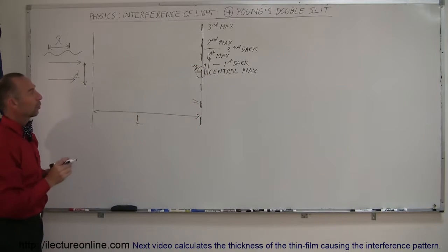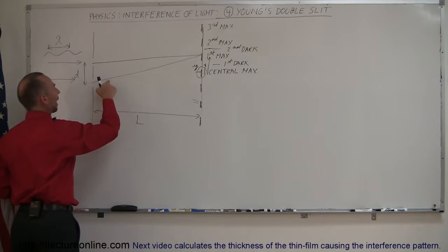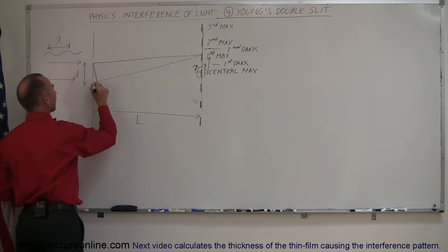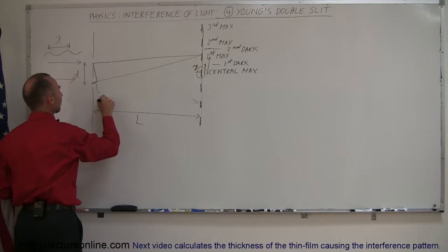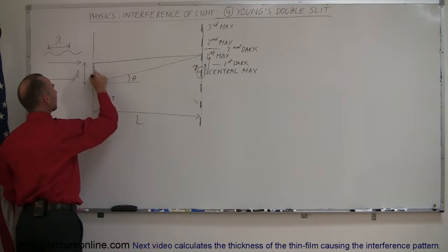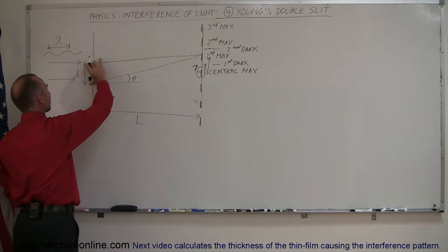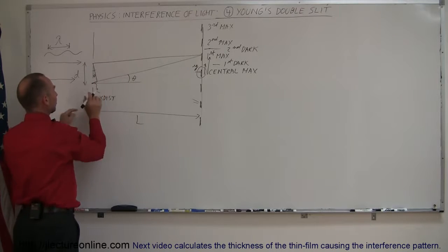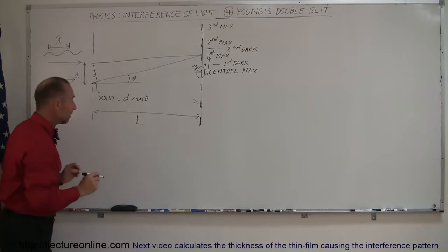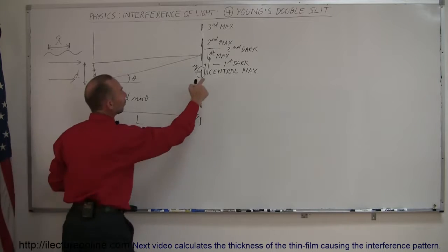To find the location of the first maximum, we can see that one path is slightly longer than the other. Drawing a perpendicular line, the extra distance traveled by the second ray compared to the first ray can be identified. If this angle is theta, then the extra distance is opposite to the angle in the triangle with hypotenuse d, giving us d times sine theta. If the extra distance traveled equals one lambda, we get to the first maximum.